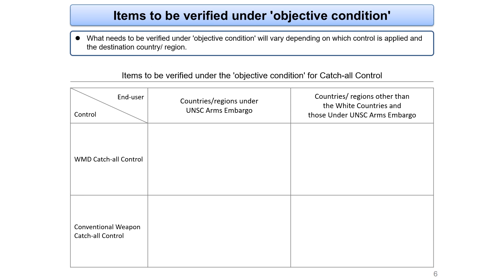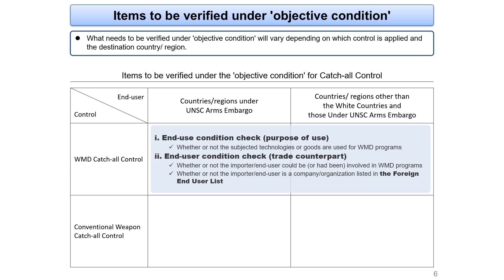What needs to be verified under objective condition with catch-all control varies depending on which control — WMD or conventional weapon — is applied and on the destination country or region. The license application is not required if the destination is one of the white countries, such as the U.S. or Germany. For WMD catch-all control applied to non-white destinations, you need to verify two aspects: the end-use condition — whether the technologies or goods will be used for WMD programs — and the end-user condition — whether the importer or end user is or has been involved in WMD programs.